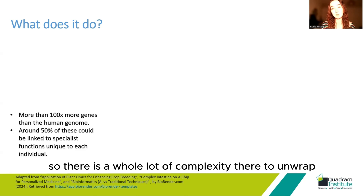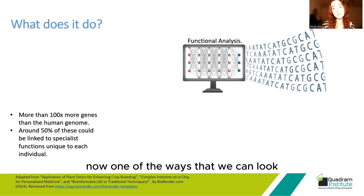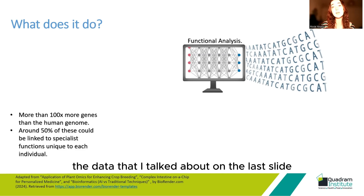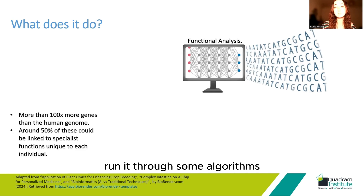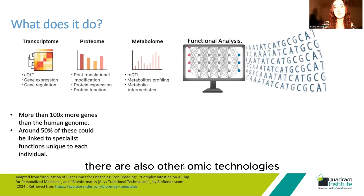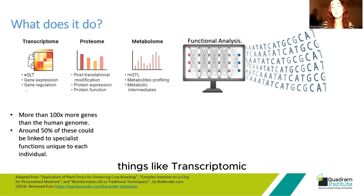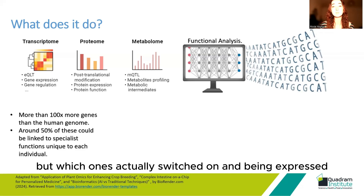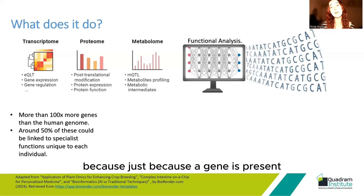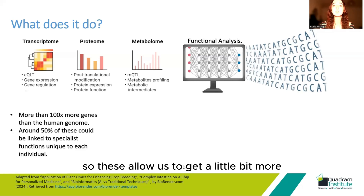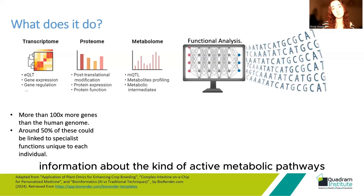One of the ways we can look at what they're actually doing is functional analysis. We take the sequencing data, run it through some algorithms, and based on the genes present, we can get an idea of what kind of functions are being performed in the gut. There are also other omic technologies — things like transcriptomics, proteomics, and metabolomics. Each of these is designed to understand not just what genes are present, but which ones are actually switched on and being expressed, because just because a gene is present doesn't mean it's actively being used and transcribed. These allow us to get more information about active metabolic pathways and products being produced.